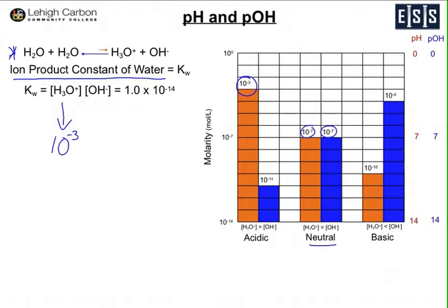But what happens, because the constant, the multiplication of these two is always 10 to the minus 14, that forces the OH- concentration down to 10 to the minus 11. You multiply these two, you add the exponents, so the product is still 10 to the minus 14. And so now you have an acidic situation, because you added a bunch of H3O+, and your OH- has dropped down to 10 to the minus 11.